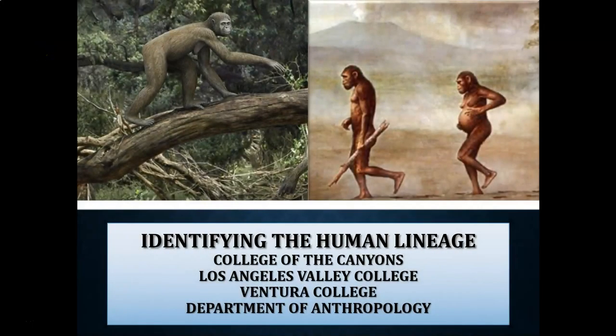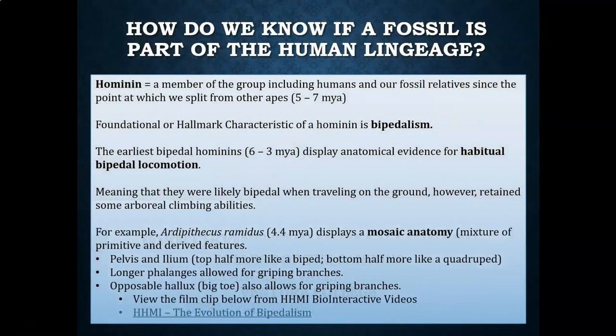Today we're going to go over the PowerPoint presentation on identifying members of the human lineage. This will correlate with chapter 9 in the Explorations textbook, if you're using the free textbook, or it also correlates with chapter 9 in the Essentials textbook. The first thing we're going to examine is how do we identify or determine if a fossil is part of the human lineage instead of the ape lineage.